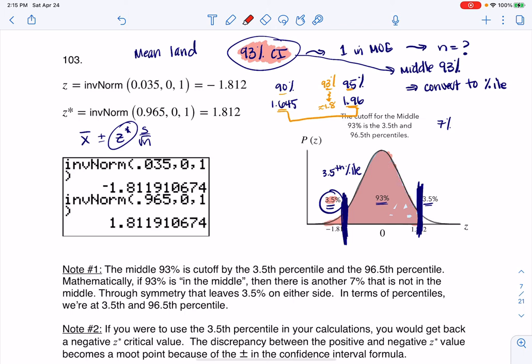If I add that 93% there, you can see that then from here on down is the 96.5th percentile. And if I want to figure out what z-scores go with those, I'm going to go ahead and use inverse norm.